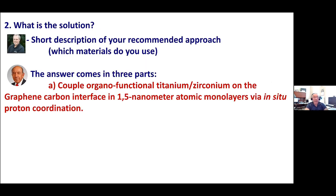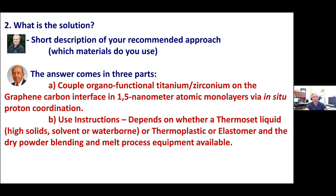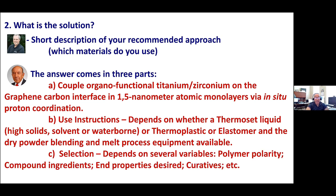How do you know what processes using a Banbury or a twin-screw extruder are best? All these are important questions because it's important to get the right physical form, the right sequence, and the right dosage to make the technology work. The selection depends on many variables — basically you get into a consulting discussion, sometimes an NDA, discussing the polarity of the polymer, the compound ingredients, end properties, what curatives are involved, and what additives are already being used.